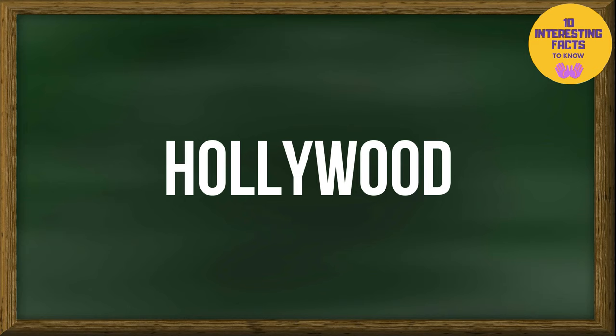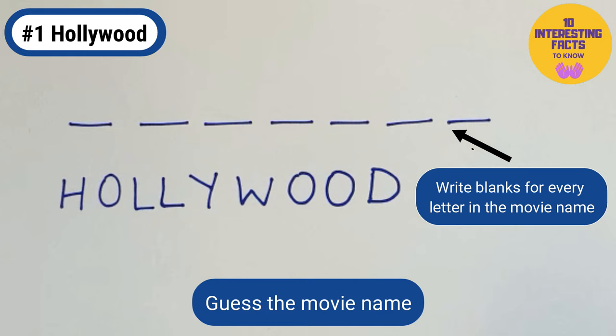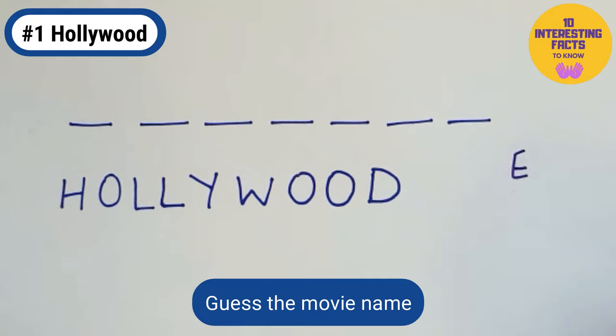First on the list is Hollywood. It's a fun game to guess the movie name. Player 1 thinks of a movie name and writes blanks for every letter in the name. Player 2 guesses the letters in that movie name. For every wrong guess, one letter in Hollywood is crossed out.